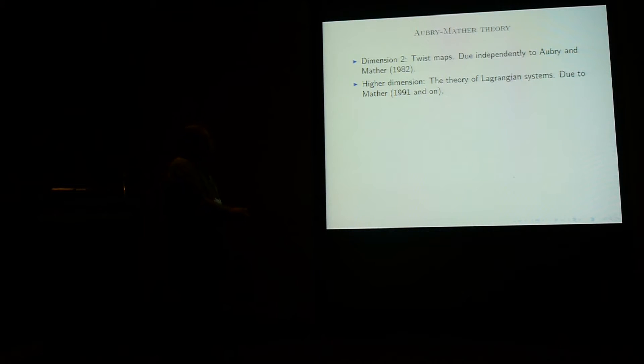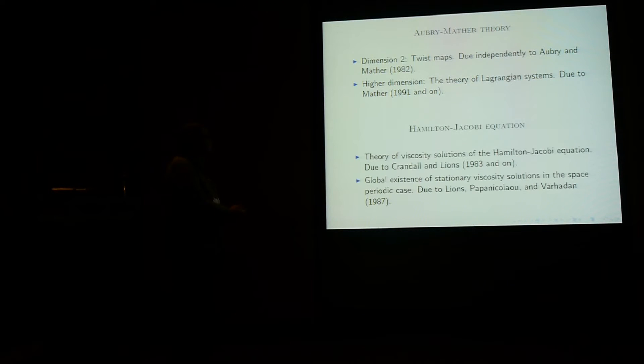So Aubrey-Mather theory in dimension 2 concerns twist maps, and it's due independently to Aubrey and Mather. And in higher dimension, it's rather the theory of Lagrangian systems, which is due to John Mather. The Hamiltonian-Jacobi equation, the theory of viscosity solution of the Hamiltonian-Jacobi equation is due to Crandall and Lions from 1983 and on. And in fact, what interests us is the global existence of stationary viscosity solution. And this is due to Lions, Papanicolaou, and Varadhan, and by the way, this is still a preprint. It has never been published.